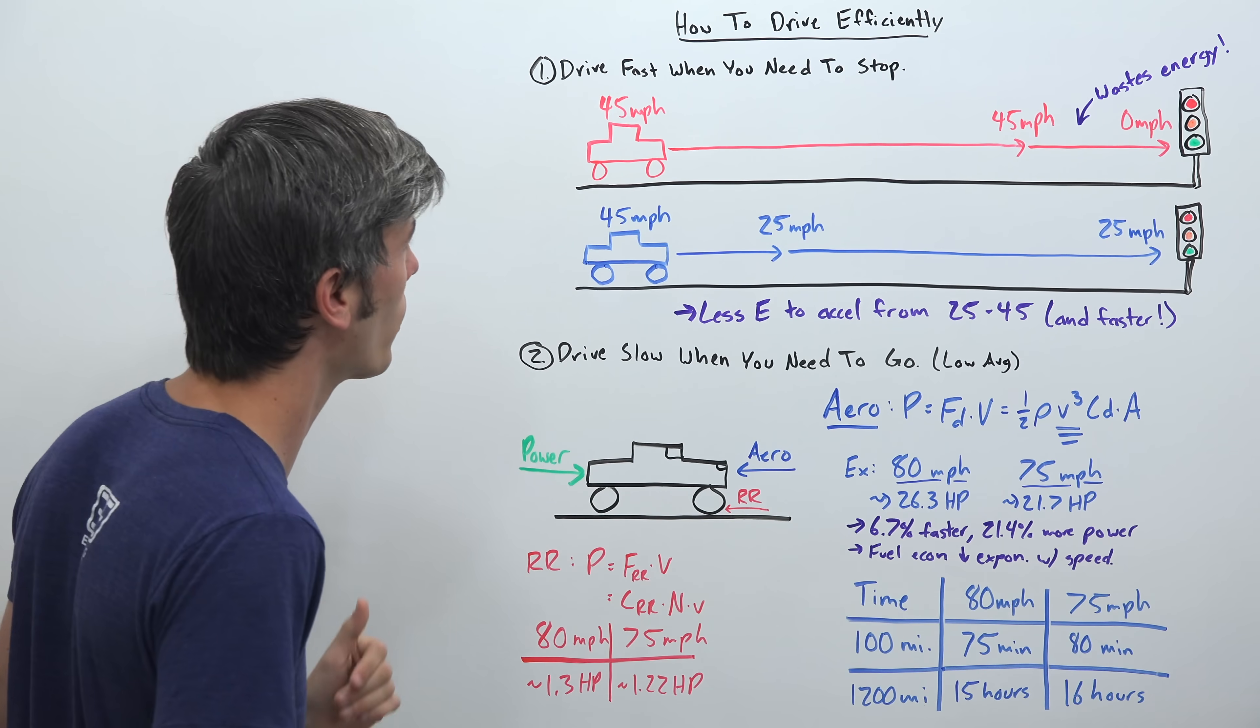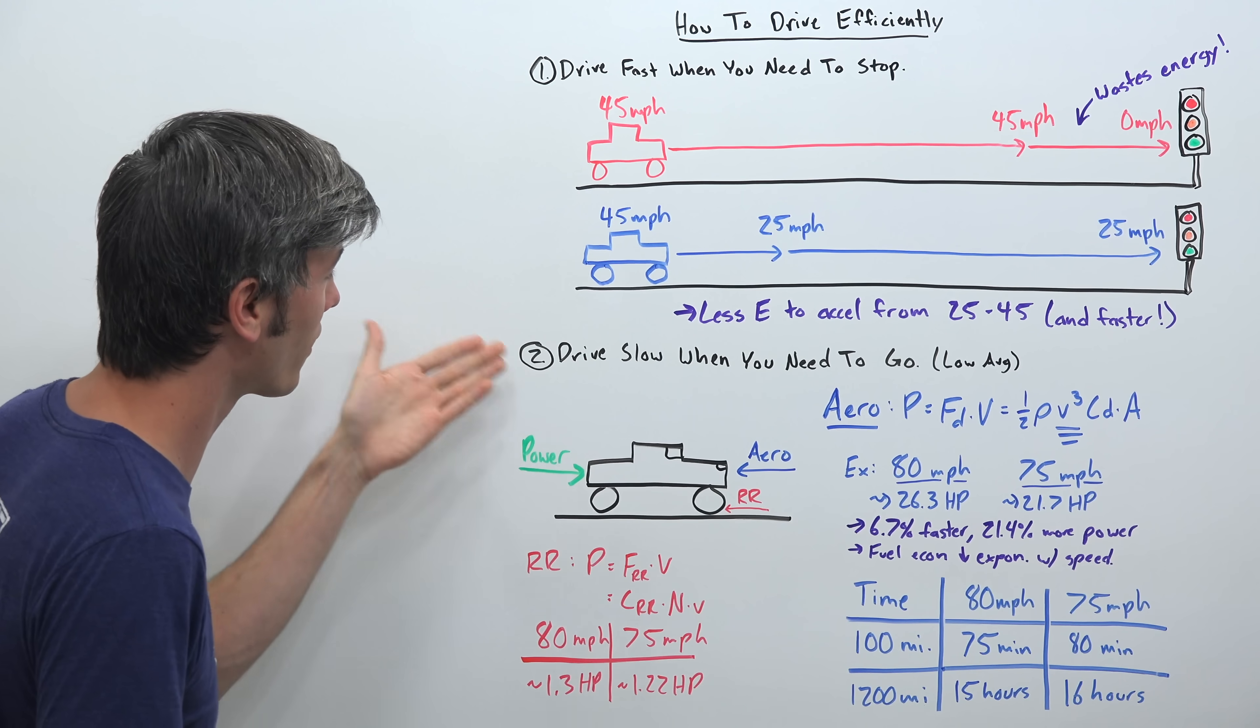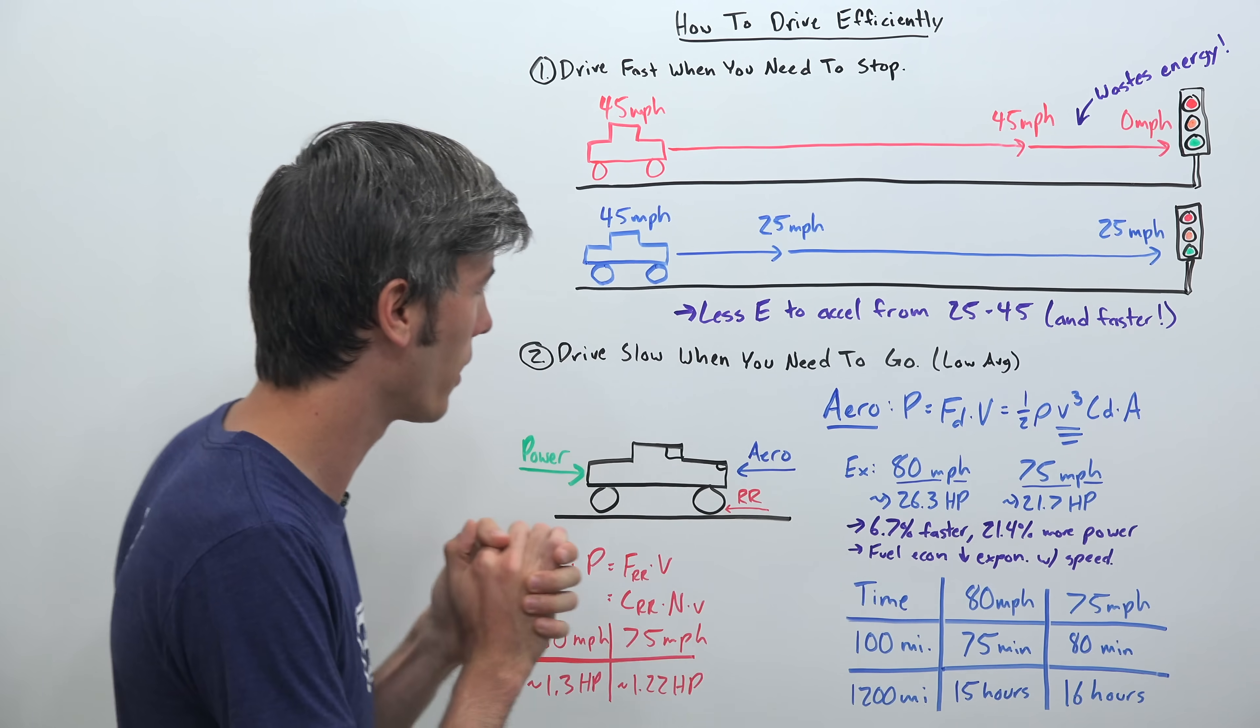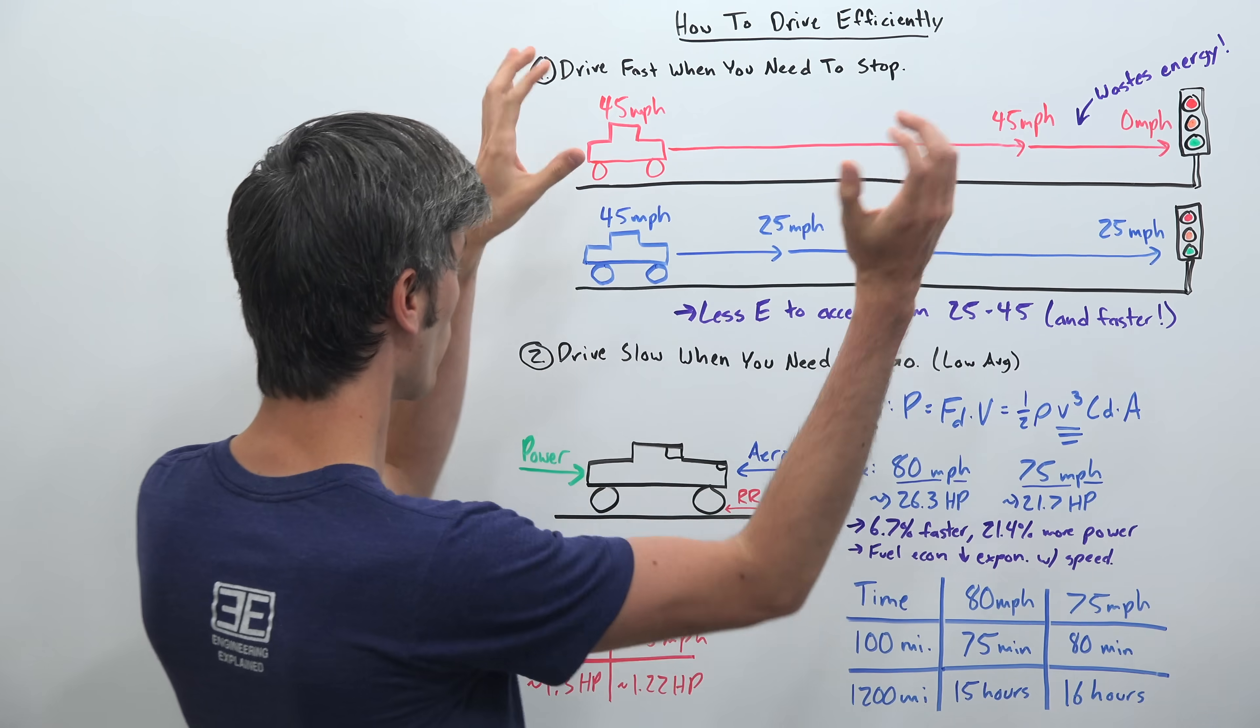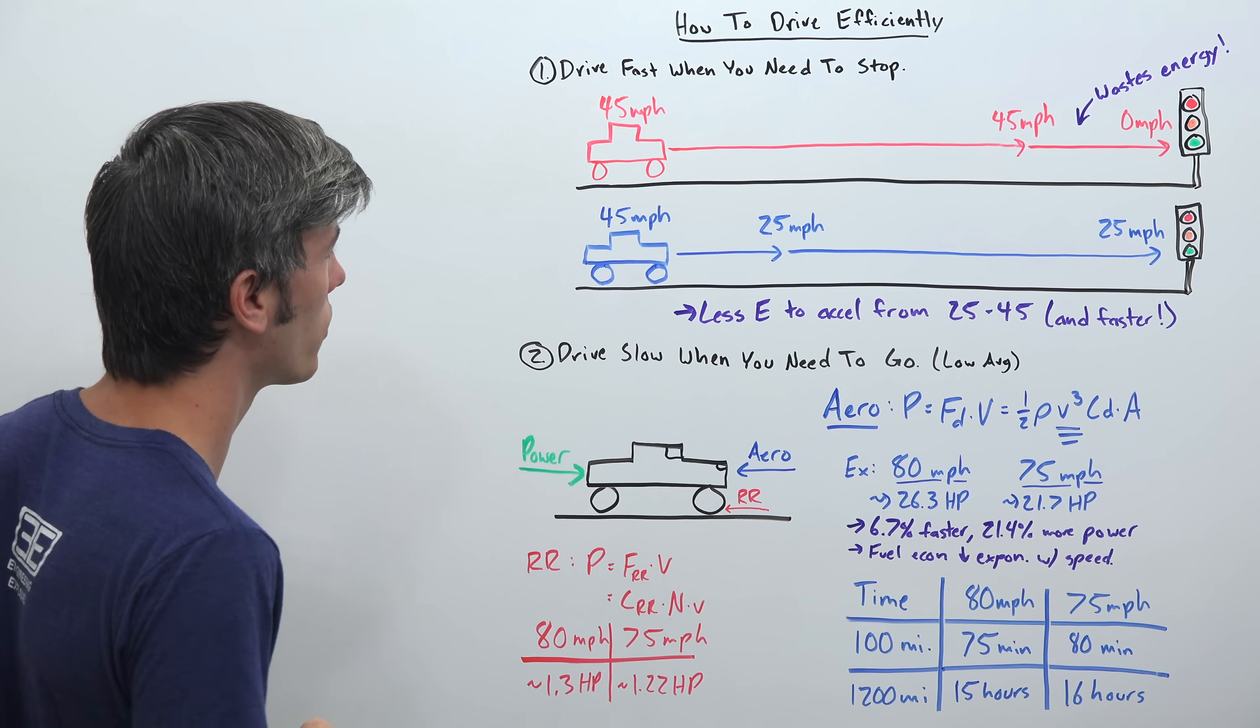So the first one being drive fast when you need to stop, basically keeping your speed as high as possible. And then the second one being drive slow when you need to go. Nice little rhyme there, but basically meaning keep your average speed as low as possible. So looking at this first one here, we've got two different scenarios, a bad scenario and a good scenario, a more efficient scenario.